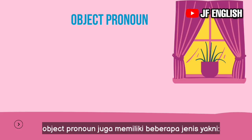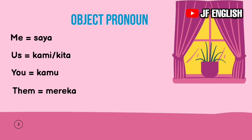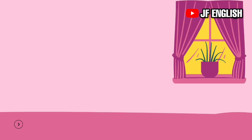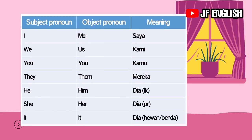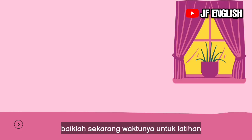Just like subject pronouns, object pronouns have several kinds as well. They are: me (saya), us (kami/kita), you (kamu), them (mereka), him (dia — laki-laki), her (dia — perempuan), it (untuk hewan atau benda). Agar lebih jelas perbedaan antara subject pronoun dan object pronoun, perhatikan tabel berikut.